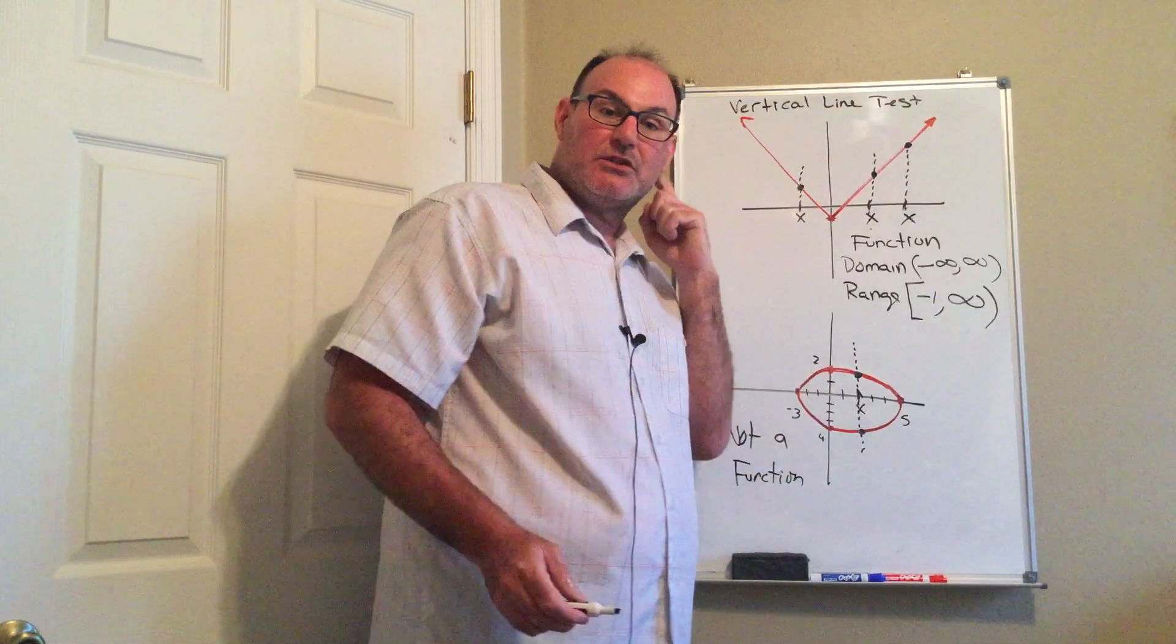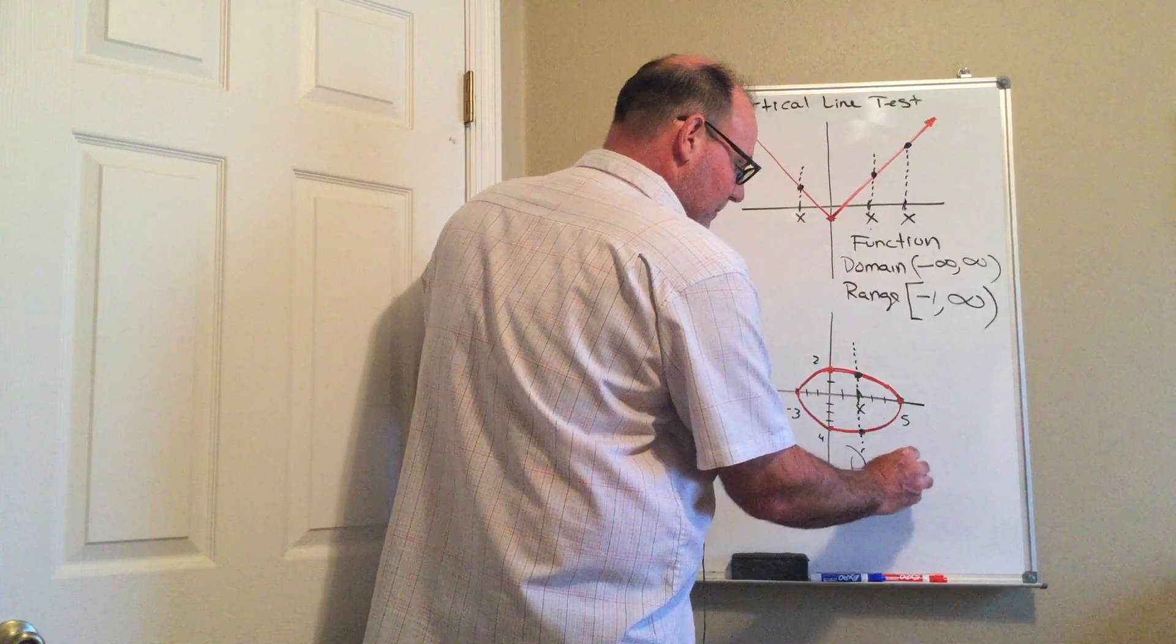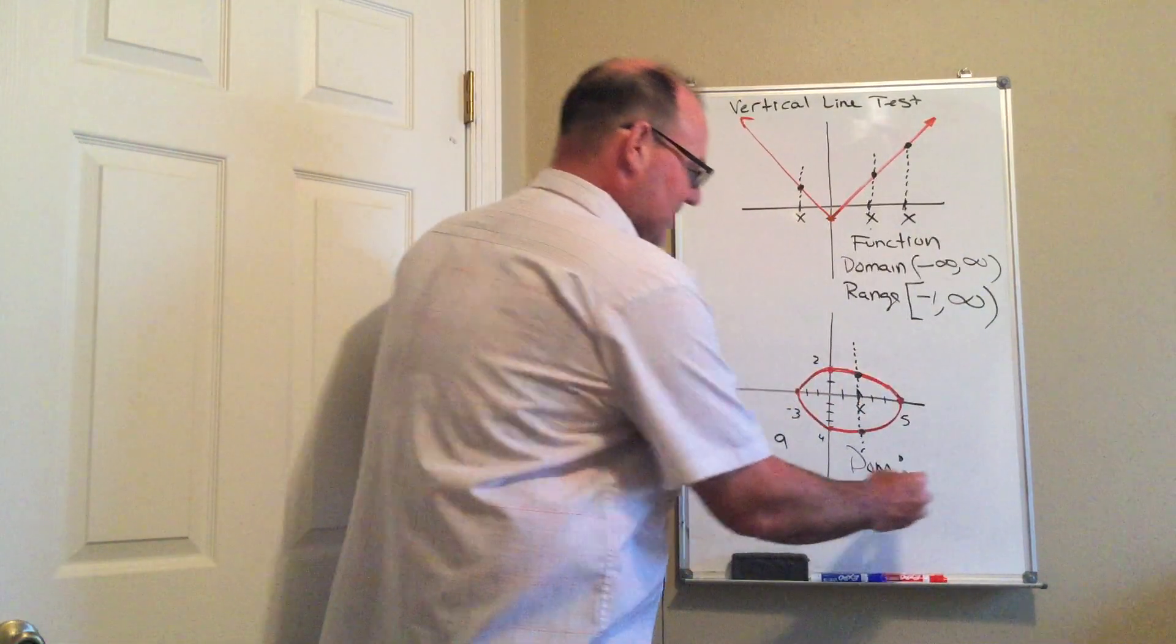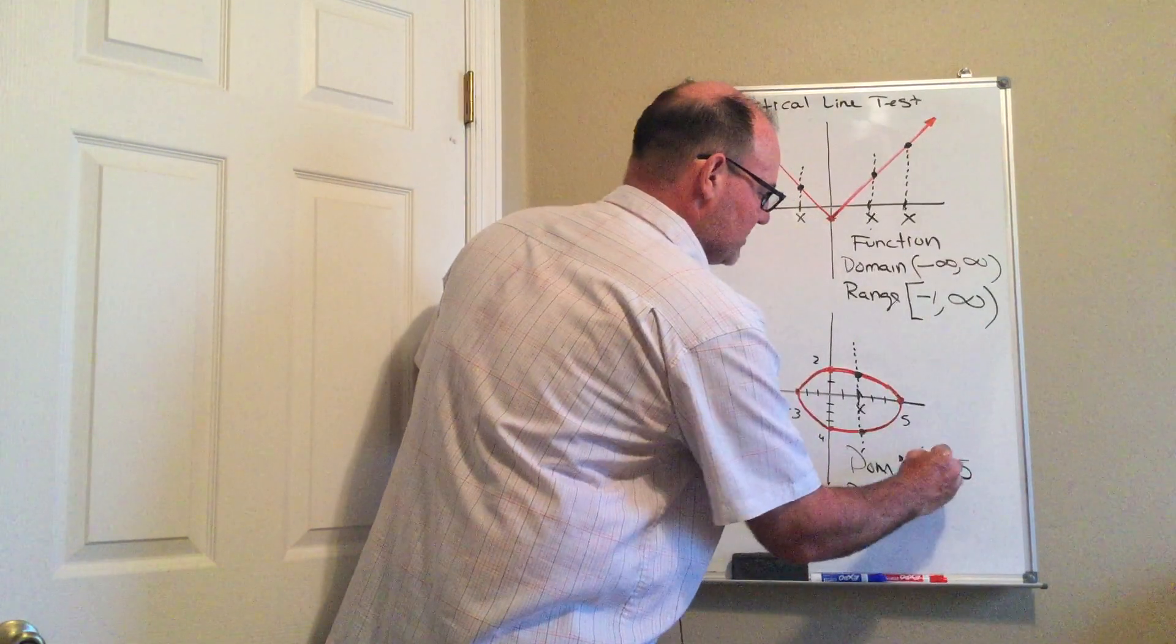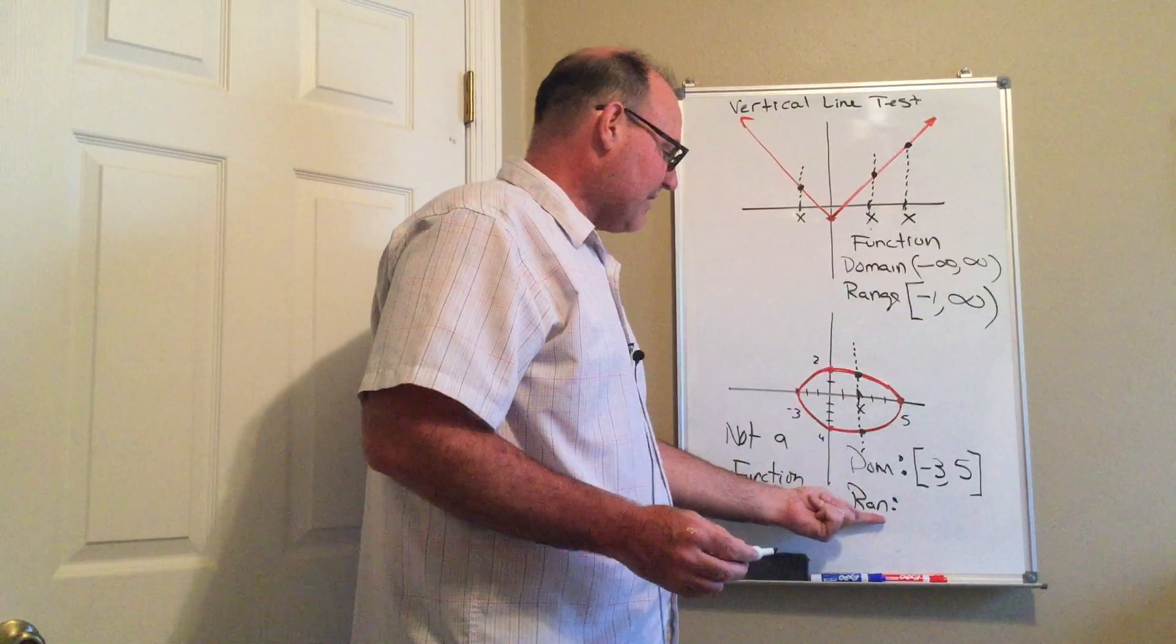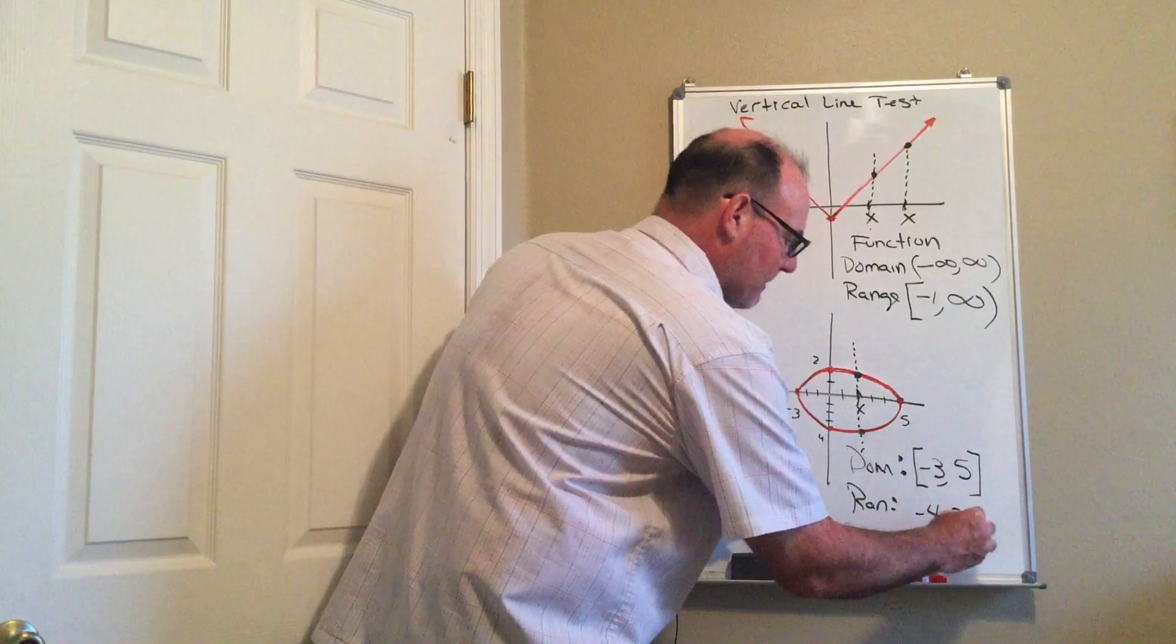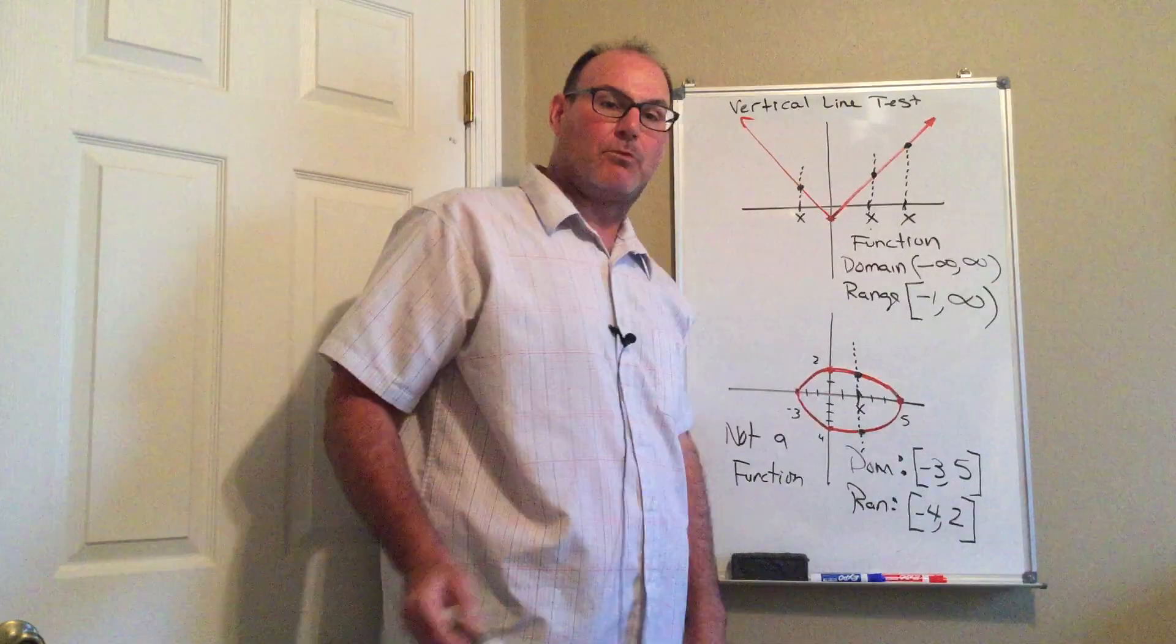Now I can still talk about the domain and the range of this though. The domain again is my x values, I'm going to look left and right. So the furthest left this graph goes is negative three, the furthest right this graph goes is five. So my interval negative three to five is the domain. Then the range, the furthest down this graph goes is negative four and the furthest up it goes is positive two. And there's my domain and range.